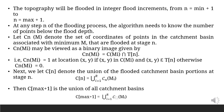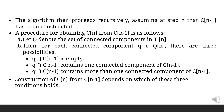c(max+1) is the union of all catchment basins, that is, c(max+1) = union from i=1 to r of c(mi). It follows that c(n-1) is a subset of c(n). The algorithm for finding the watershed lines is initialized with c(min+1) = t(min+1). The algorithm then proceeds recursively: assuming at step n that c(n-1) has been constructed, a procedure for obtaining c(n) from c(n-1) is applied.